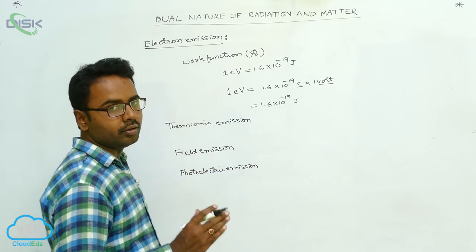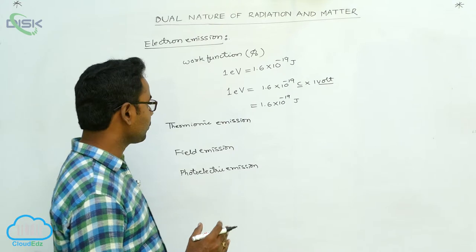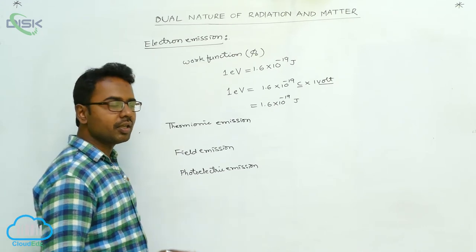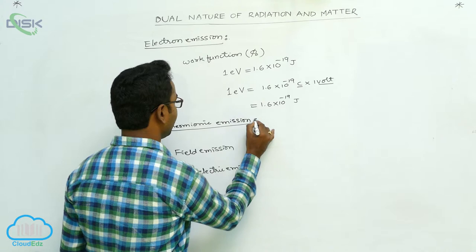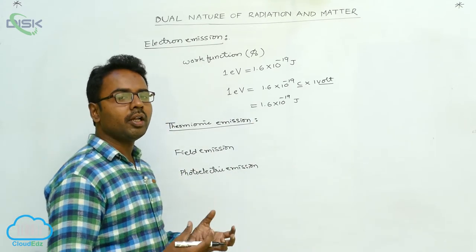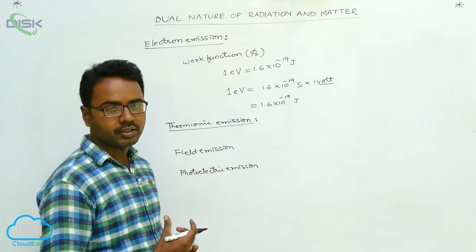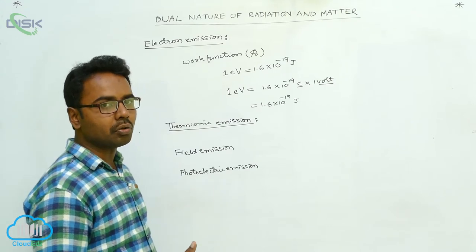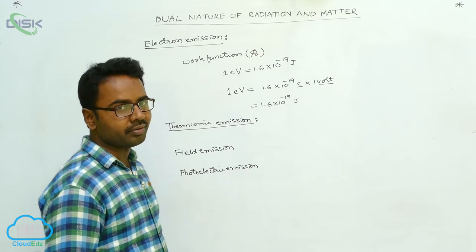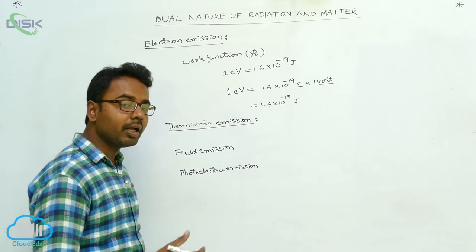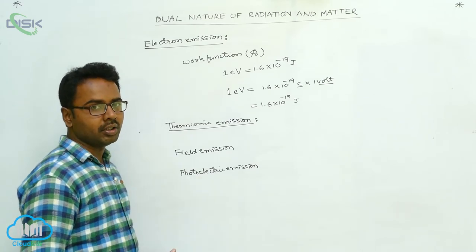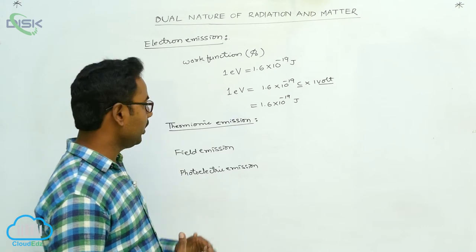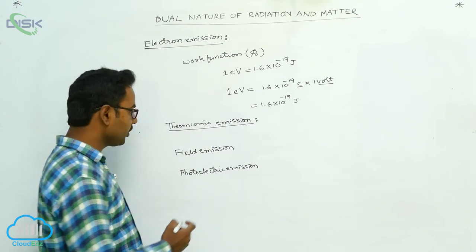Thermionic emission: when we supply a suitable amount of heat energy — when we heat a solid surface — the heat energy is supplied to the electrons, the electrons gain that heat energy and come out from the metal surface. Such emission of electrons by supplying heat energy is called thermionic emission. Thermal energy means heat energy, so thermionic emission is the emission of electrons by supplying heat energy.